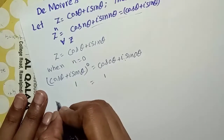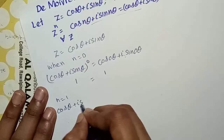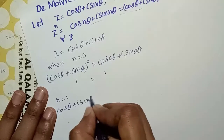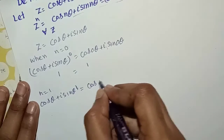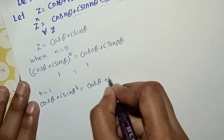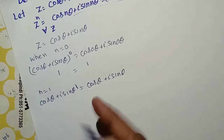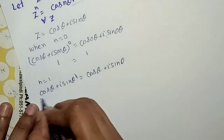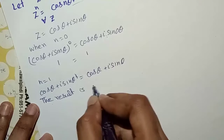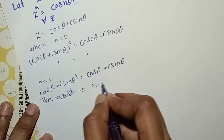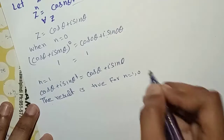Now let's do n equal 1. For n equals 1, cos theta plus iota sin theta to the power 1 equals cos theta plus iota sin theta. So the result is true for n equals 0 and n equals 1.